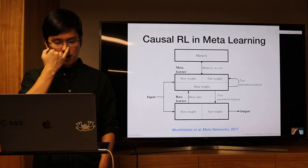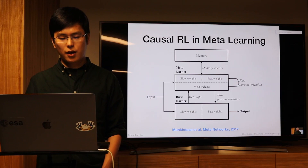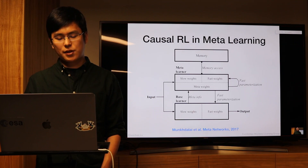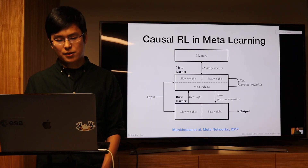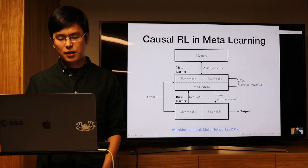In meta-learning, you train a model not just for one task but for a family of tasks sampled from the same distribution. The question is: what features can be shared across tasks? These are the most robust structural features. If you can express independent causal modules that are shared across different tasks, you can directly employ those modules in new tasks and learn their weights very quickly.